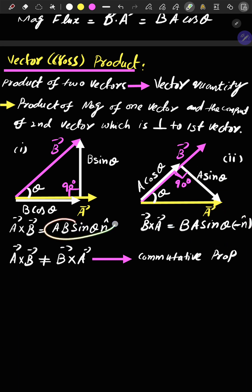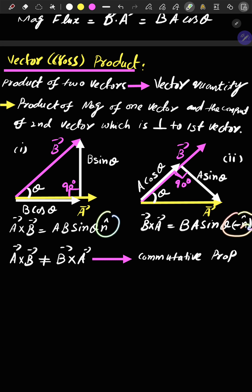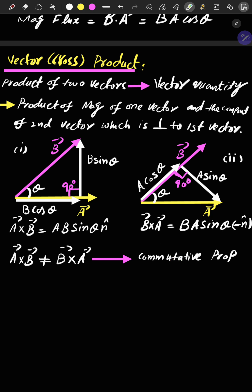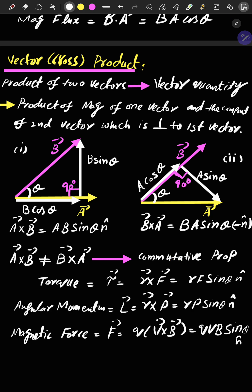The right-hand sides of both equations are vectors with opposite directions — negative n-hat and n-hat — which clarifies that A cross B is not equal to B cross A. So the vector product does not obey the commutative property. Examples of vector product are torque, angular momentum, and magnetic force.